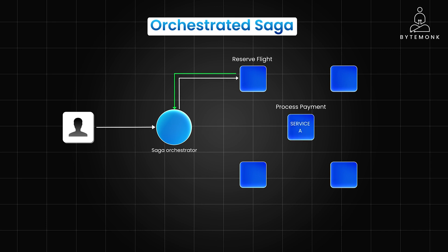In a simple use case, a saga orchestrator sends a command to service A. Service A attempts an operation; if successful, it sends a success message to the orchestrator. If it fails, it retries the operation a predetermined number of times with appropriate back-off strategies. And if all retries fail or the failure is deemed permanent, service A sends a failure message to the orchestrator. The orchestrator then triggers compensating transactions in other services to undo the effects of the failed operation.